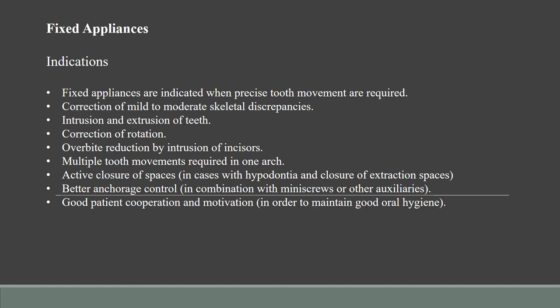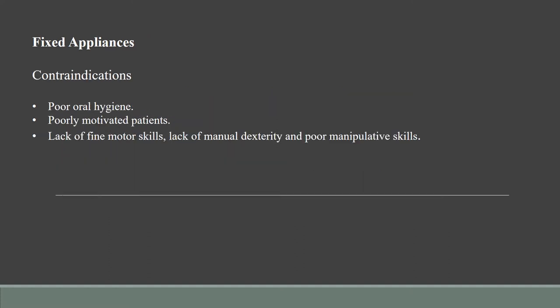Fixed appliances are also indicated in patients who are cooperative, compliant and motivated. Coming to the contraindications, poor oral hygiene as such is not a contraindication. However, it is a pointer to let you know that this patient might have difficulties in maintaining proper oral hygiene over an extended period of time. Orthodontic treatment takes anywhere between two to four years to complete, during which time the patient has to maintain their hygiene meticulously, failing which there can be gingival recession, gingival inflammation, gingival enlargement, and periodontal complications.